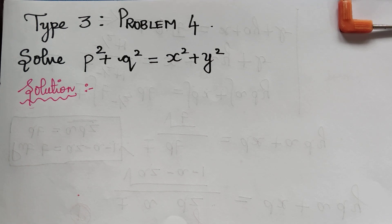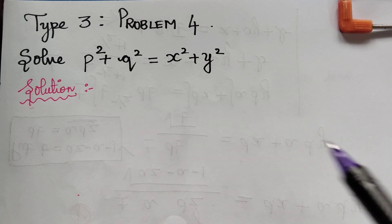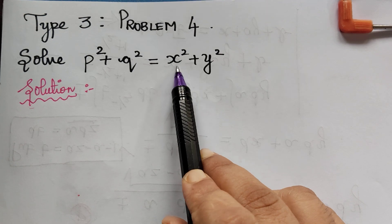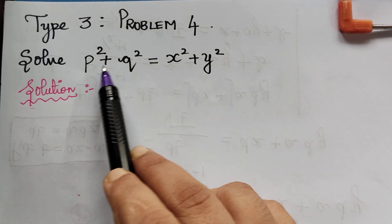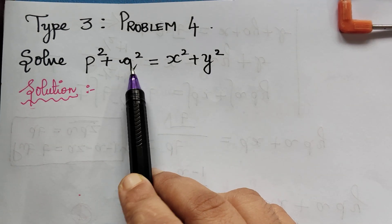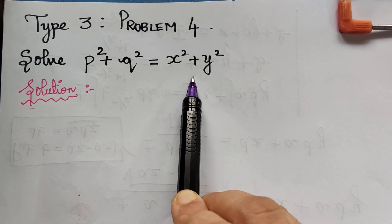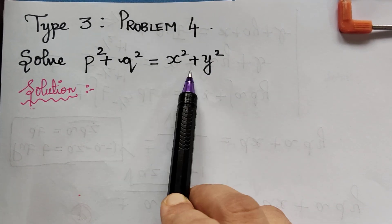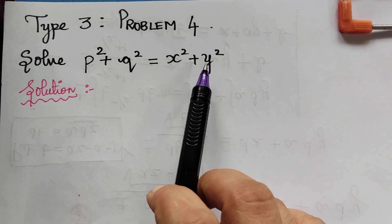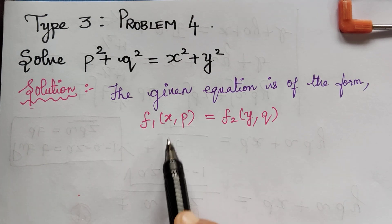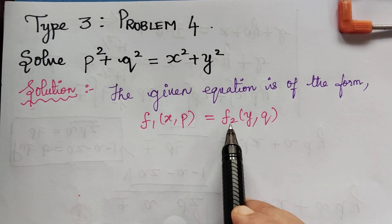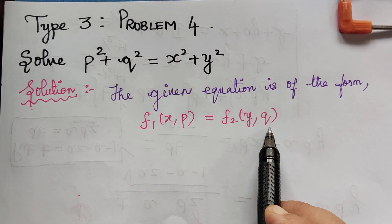Here we have the question: p² + q² = x² + y². We see that in this given equation, only x, y, p and q are present and z is not present. In that case, the given equation is of the form f1(x, p) = f2(y, q).